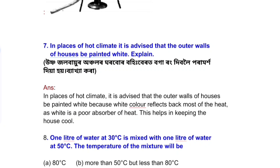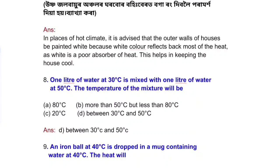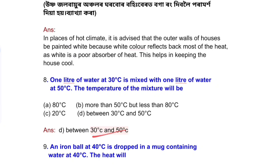One liter of water at 30 degrees Celsius is mixed with one liter of water at 50 degrees Celsius. The temperature of the mixture will be between 30 degrees and 50 degrees Celsius.